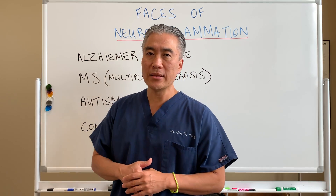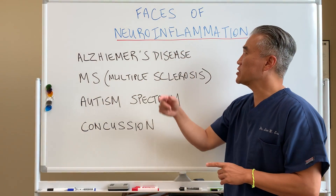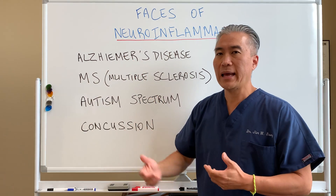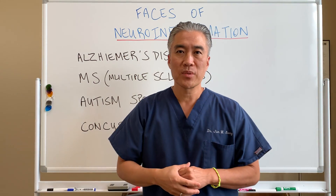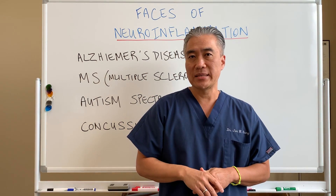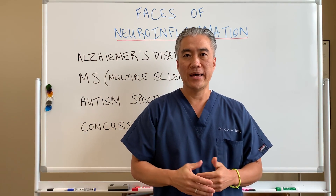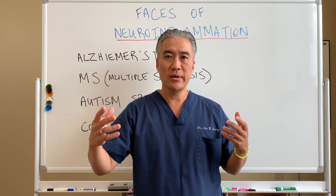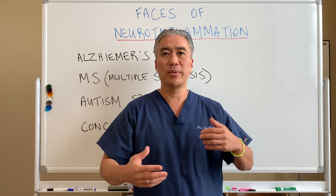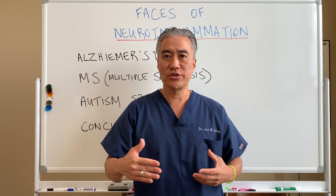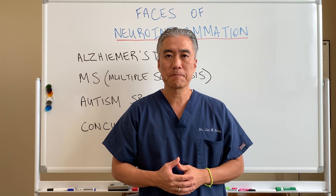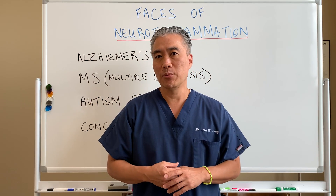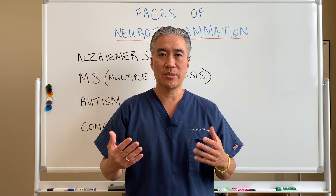Looking at the phases of neuroinflammation, number one is Alzheimer's disease. Alzheimer's disease is basically thought of as short-term memory loss, confusion, long-term memory loss, losing direction, and so forth. We think of it as a protein aggregation issue with amyloid plaques and some other things.